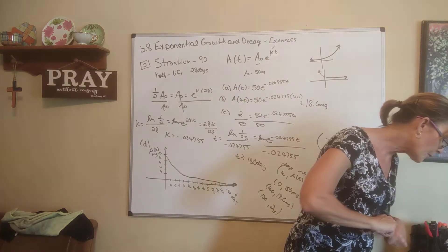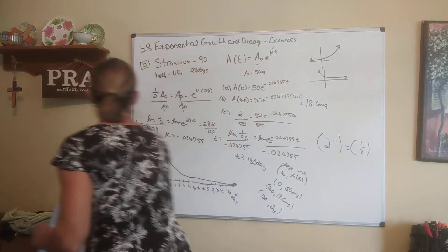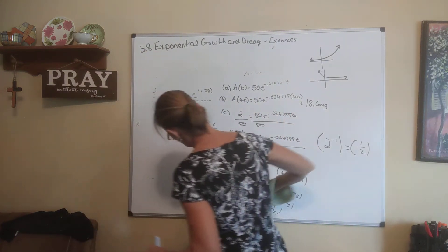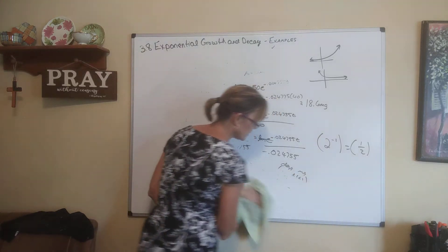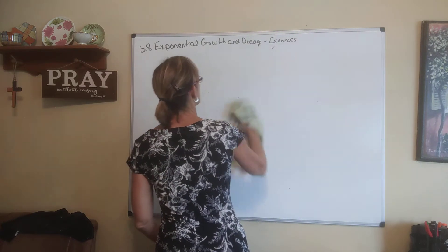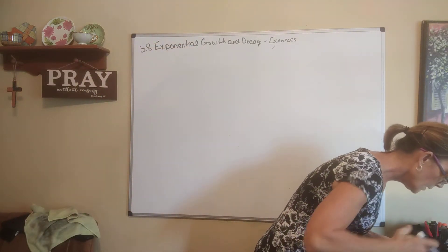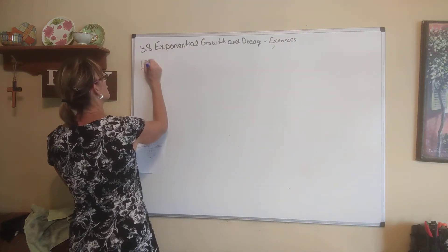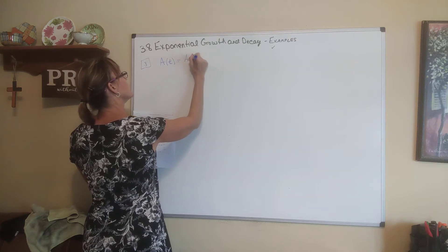Now let's look at example three. It says a sample of tritium-3 decayed to 94.5% of its original amount after a year. This is decaying at a rate proportional to its size, exponential in nature, so we use an exponential model: A(t) equals A-sub-zero times e to the kt. We have to figure out the half-life, but they gave us this information to get started.